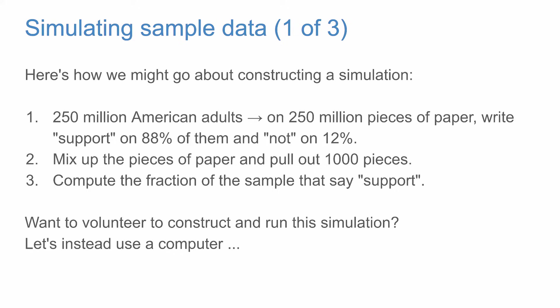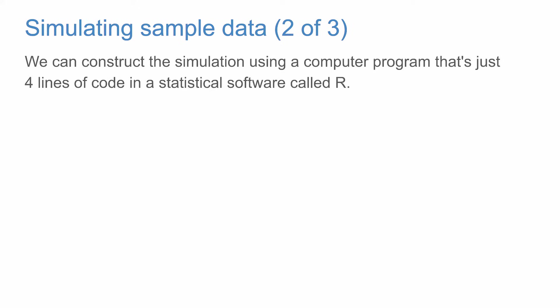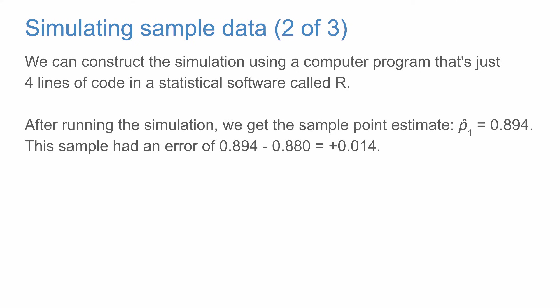We can construct this simulation using a computer program — just four lines of code in the statistical software R. After running the simulation, we find that 894 of the simulated responses were 'support.' So our point estimate is 894 divided by 1,000, which is 0.894. We represent this sample point estimate as p1-hat — a hat denotes it is the sample proportion. This sample wasn't perfect; we know the true proportion is 0.88, so this sample had an error of 0.014.